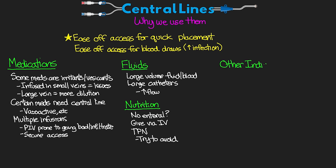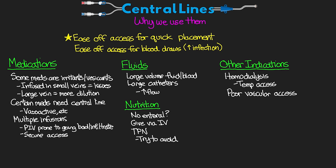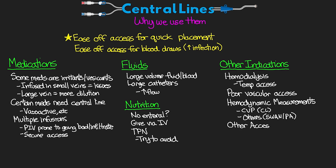The last category covers other indications for a central line. These include hemodialysis, where if a patient needs temporary access we can give them a line with faster flow rates. Some patients also just have poor vascular access, making peripheral IVs next to impossible to obtain. We also get the benefit of hemodynamic measurements being available to us — for example, getting the CVP with a regular central line, as well as other values if we insert a Swan. Lastly, think of transvenous pacers, inserting a Swan, or other cardiac devices.